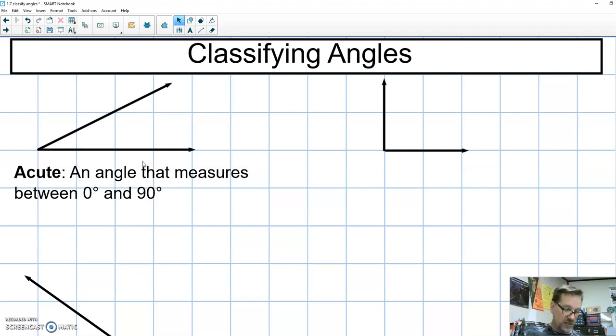It cannot be zero. It cannot be 90. So what we're going to say is our angle, we call our unknown angle theta. This is a Greek letter. Theta has to be bigger than zero, but it has to be smaller than 90. All right, that's how I'm going to say an acute angle.